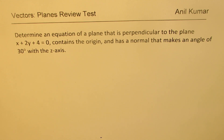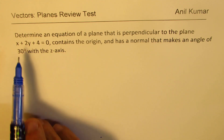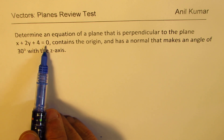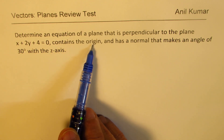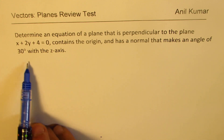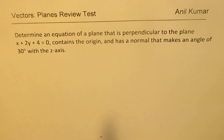This is probably the toughest question in that list, so I'd like you to really concentrate on the solution and understand different concepts. The question here is: determine an equation of a plane that is perpendicular to the plane x plus 2y plus 4 equals to 0, contains the origin, and has a normal that makes an angle of 30 degrees with the z-axis.